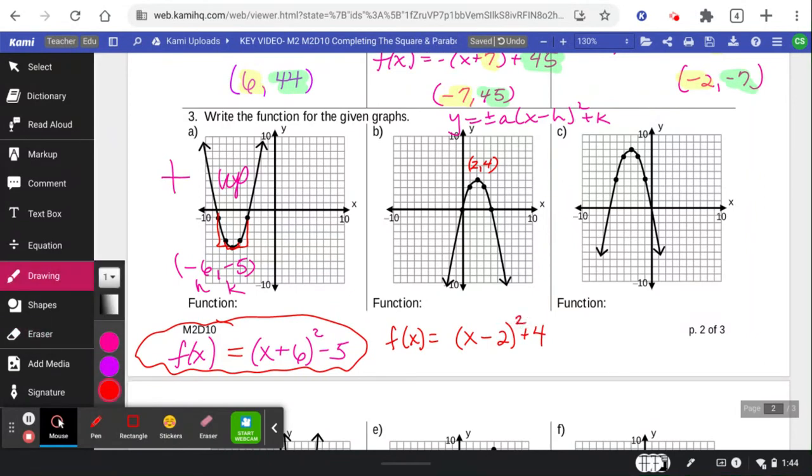And then I'm going, okay, this is a downwards-facing parabola. So I need a negative. And it's the parent stretch, out 1, down 1. So I don't need any other kind of a number. We're done.